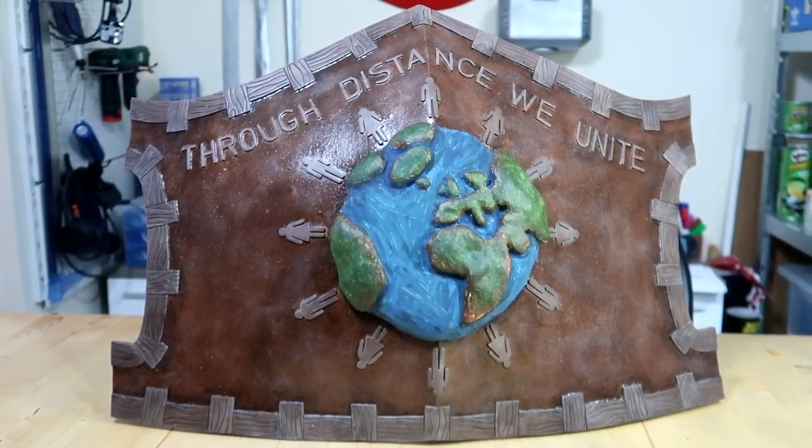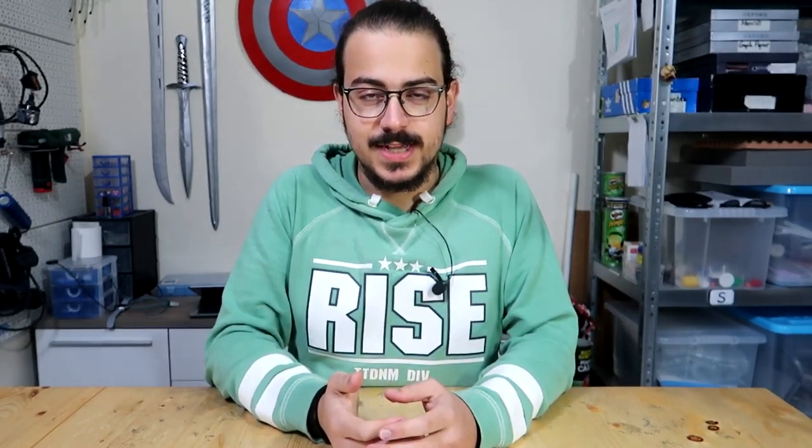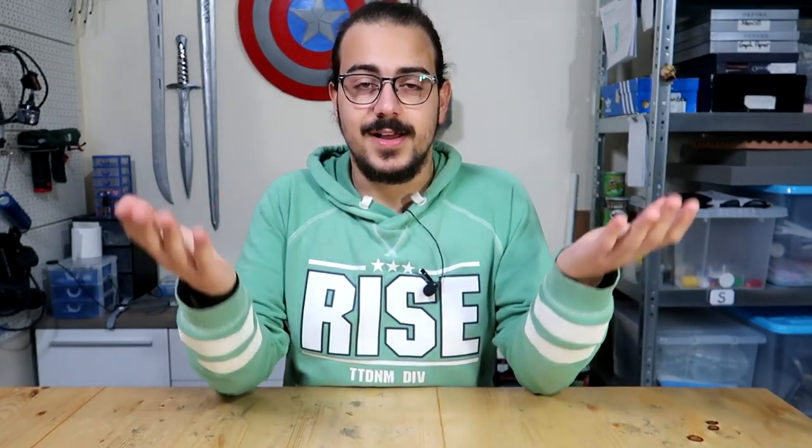It's a shield made to look like a huge face mask. It has a 3D emblem on the front showing how, through distance, we are still united. Yes, we keep our social distance, but we're still fighting this together. Two more important things I wanted to say before I started this video.